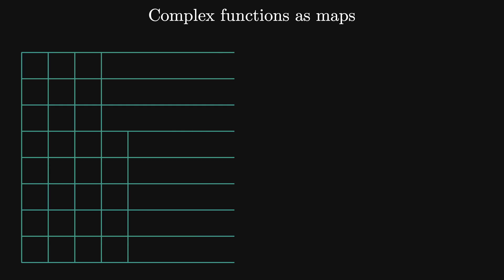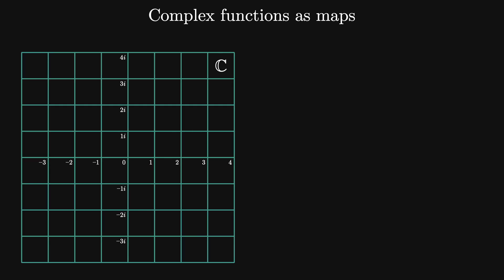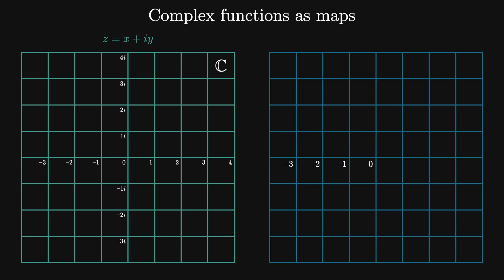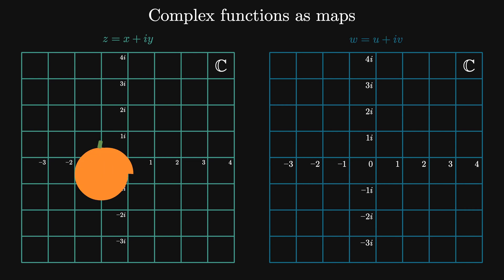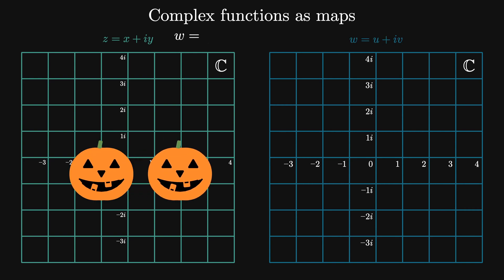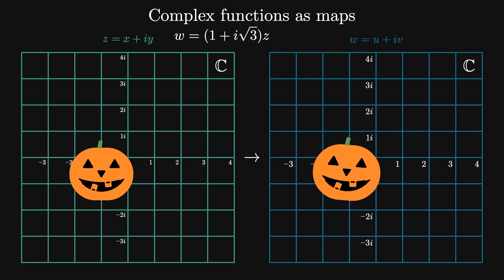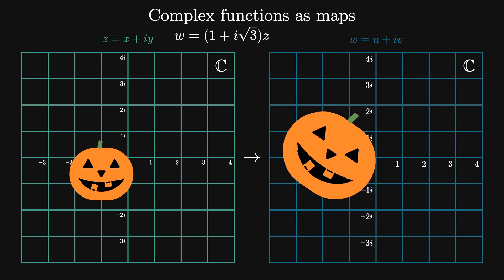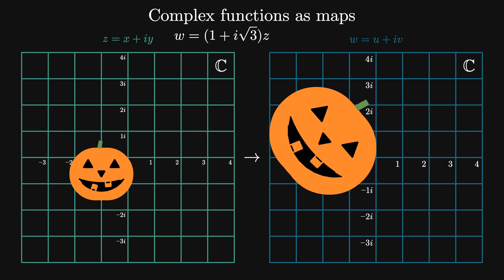We can think of complex functions as maps from the complex plane to the complex plane. We'll take the left coordinate system to be our domain, with complex coordinates z equals x plus iy, and the target space, our second copy of the complex plane, is on the right. It has coordinates w equals u plus iv. This is an example of applying the map z goes to z times 1 plus i root 3.